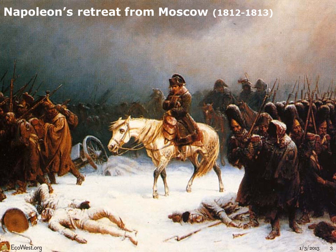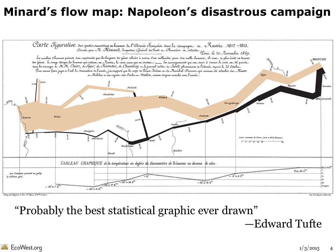One of the earliest and most famous examples of the form illustrates Napoleon's disastrous Russian campaign in the early 19th century. Created by Charles Joseph Menard, a French civil engineer, the graphic depicts the army's movements across Europe and shows how their ranks were reduced from 422,000 troops in June of 1812 when they invaded Russia to just 10,000 when the remnants of the force staggered back into Poland after retreating through a brutal winter. Data visualization guru Edward Tufte says it's probably the best statistical graphic ever drawn.